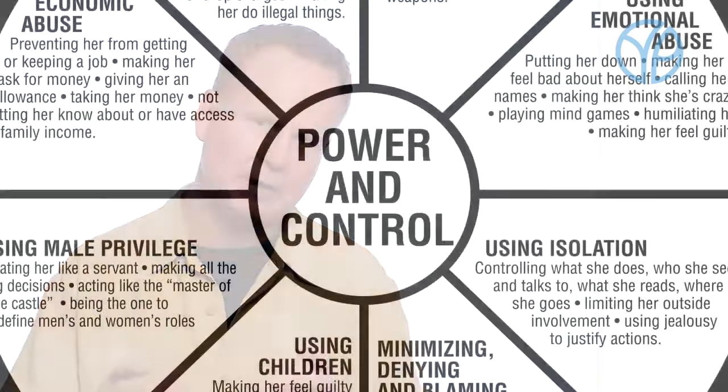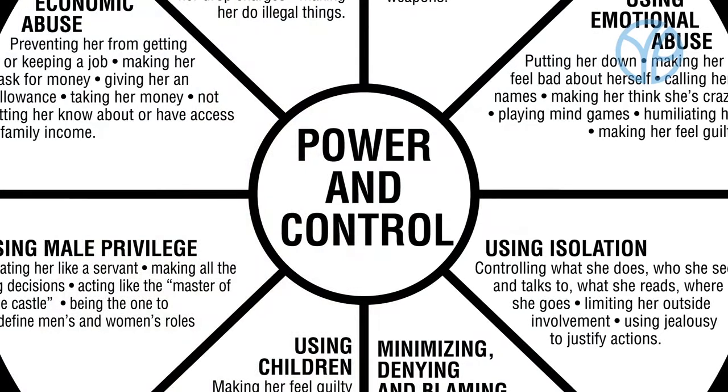And so the way in which those tactics play out changes when there's physical and sexual violence in the relationship. And if you see that power and control in the middle, that's what he ends up with when he uses the violence and all these different tactics to dominate her. He ends up with power and control.